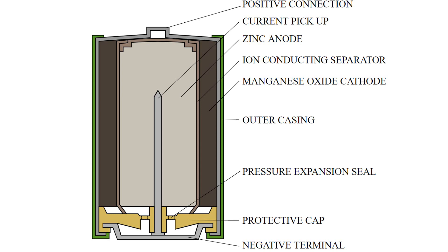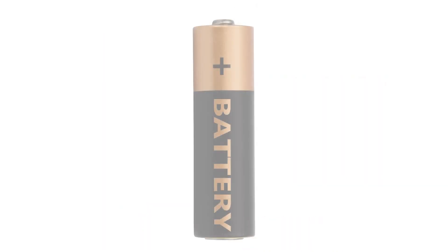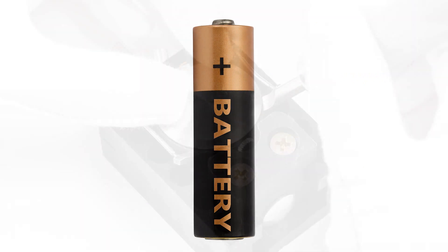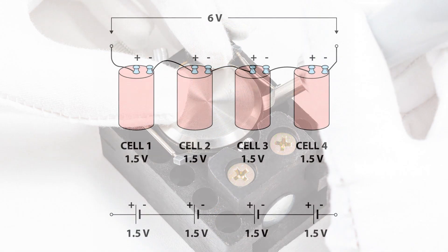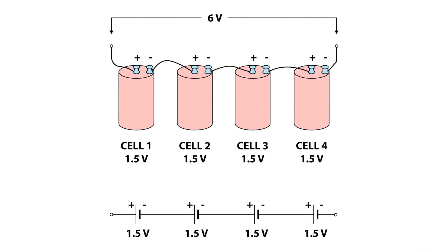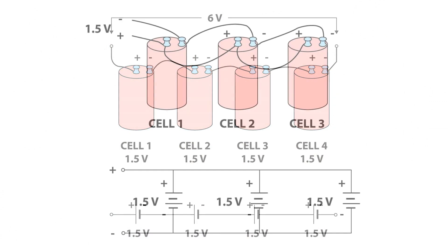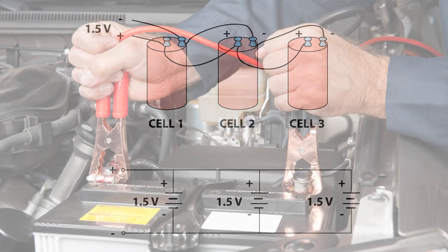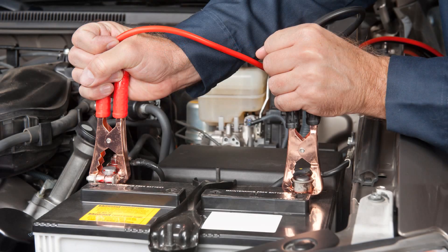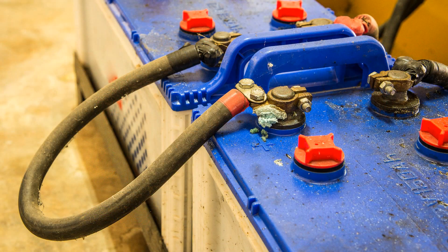We'll briefly look at different battery designs, such as the lead acid battery, the nickel cadmium battery, and the mercury battery. You'll learn what happens when you connect batteries in series or parallel. We'll also discuss topics such as shelf life and service life, primary and secondary type batteries.